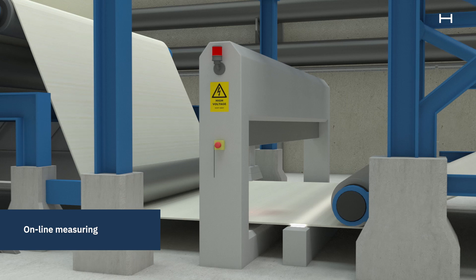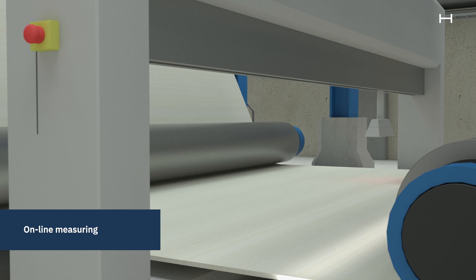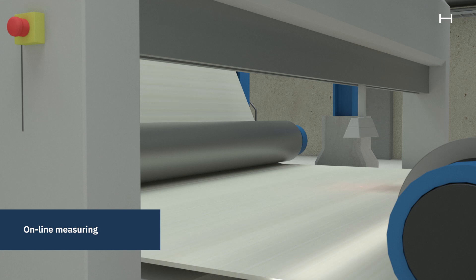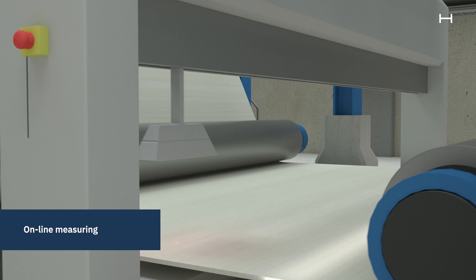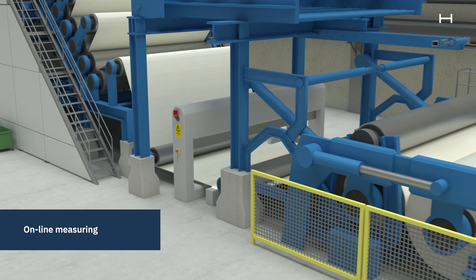To secure the right quality, the machine has an online measuring system, QCS, that measures brightness, grammage, caliper, shade and ash content, both in cross-direction and machine direction. It takes around 30 seconds for the measuring head to move across the machine. A web inspection system detects holes and stains which can be patched or removed from the paper.